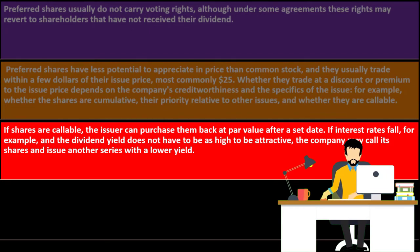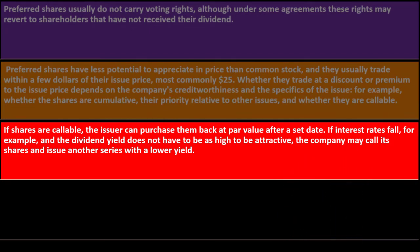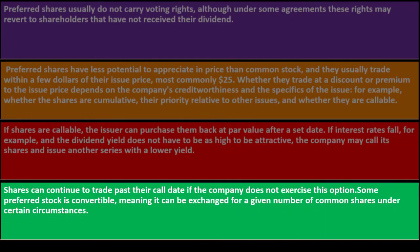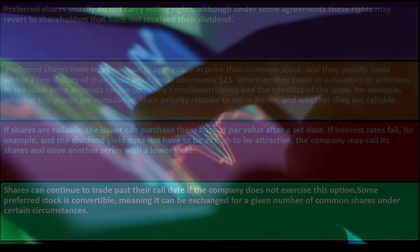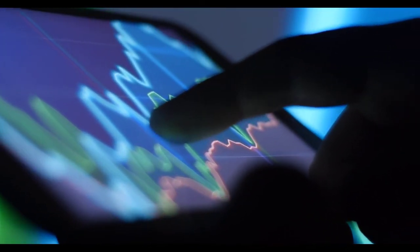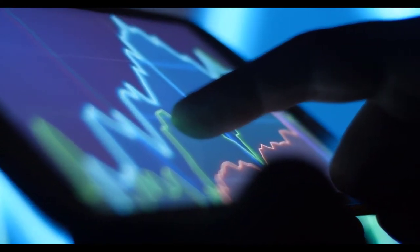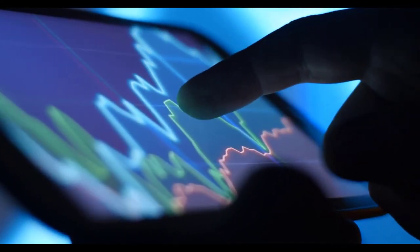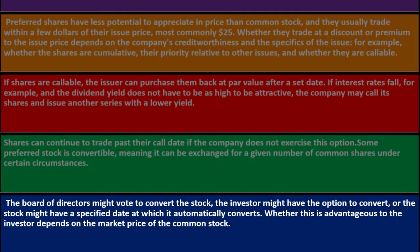The call option is usually a benefit to the issuer of preferred stocks — similar to the callable bond situation — which means it's generally not as beneficial for the investor. Shares can continue to trade past their call date if the company does not exercise this option. Some preferred stock is convertible, meaning it can be exchanged for a given number of common shares under certain circumstances — similar to the convertible bond situation.